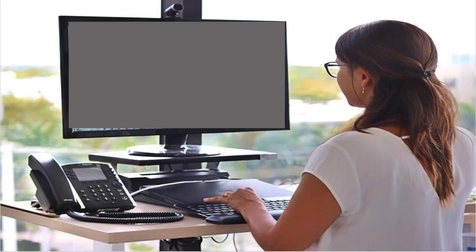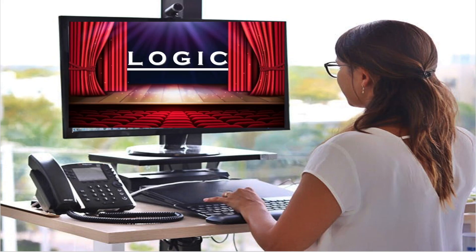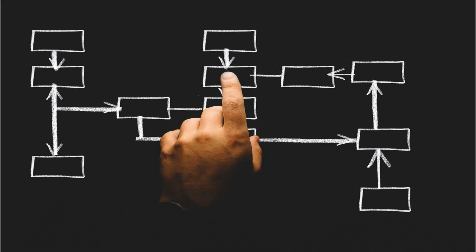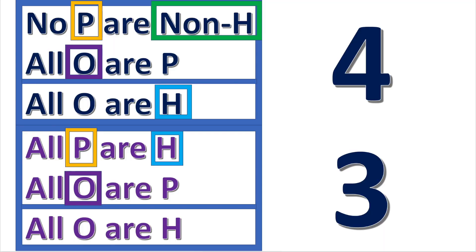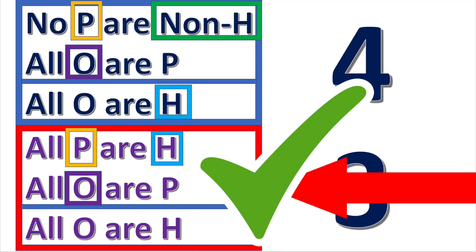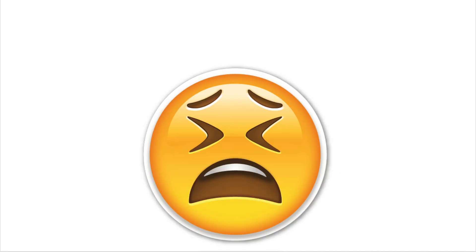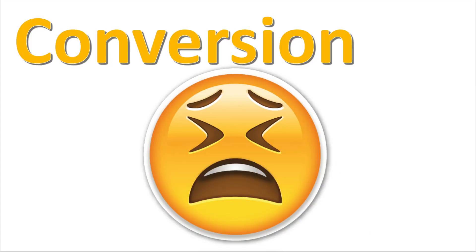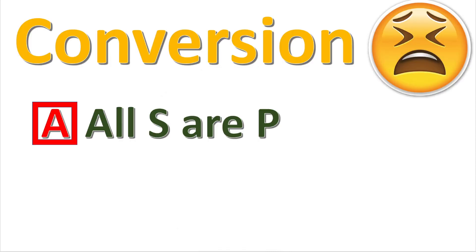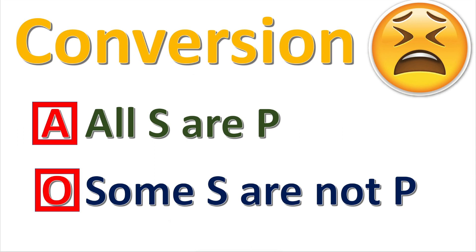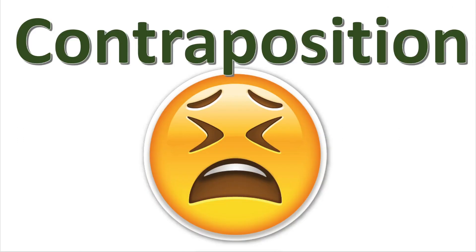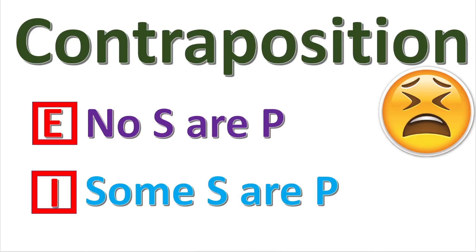See previous videos for more information on those operations. It's important that the reduced syllogism is logically equivalent to the original syllogism. You cannot use conversion on A or O propositions, or contraposition on E or I propositions.